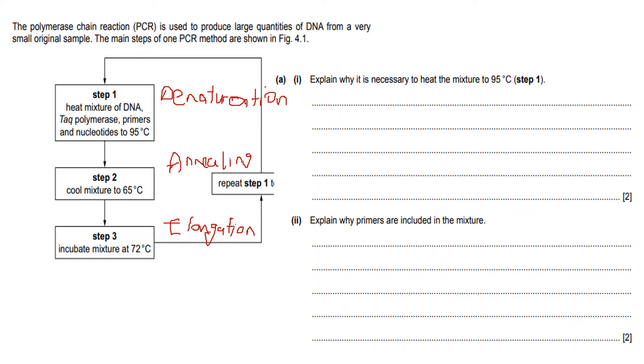So here it says, explain why it is necessary to heat the mixture to 95 degrees. I've already written here that the first step is denaturation, and you already have here 95 degrees. So what does denaturation entail? It means you separate the DNA helix, so separate DNA. And the reason, obviously, is why. So when they say explain why, they are asking you not just to describe the process, but to rather explain why that part of the process is necessary. So separate the DNA, so that the bases are exposed, so that bases are exposed, and template strands are available for replication.